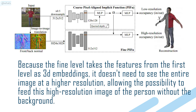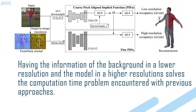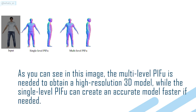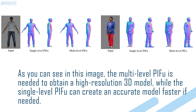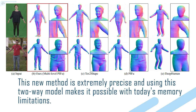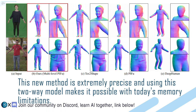Because the fine level takes the features from the first level as 3D embeddings, it doesn't need to see the entire image at a higher resolution, allowing the possibility to feed this high-resolution image of the person without the background. Having the information of the background in a lower resolution and the model in a higher resolution solves the computation time problem encountered with previous approaches. As you can see in this image, the multi-level PIFu is needed to obtain a high-resolution 3D model, while the single-level PIFu can create an accurate model faster if needed. This new method is extremely precise and using this two-way model makes it possible with today's memory limitations.